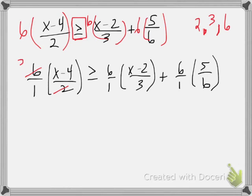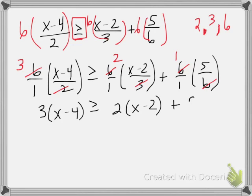And so, how's that going to happen? The 2 goes into 6 three times, the 3 goes into 6 two times, and the 6 goes into 6 one time. What does that leave me with? That leaves me with 3x minus 12 greater than or equal to 2x minus 4 plus 5.